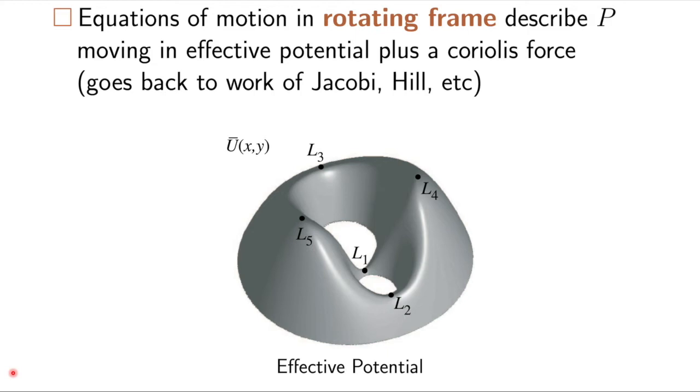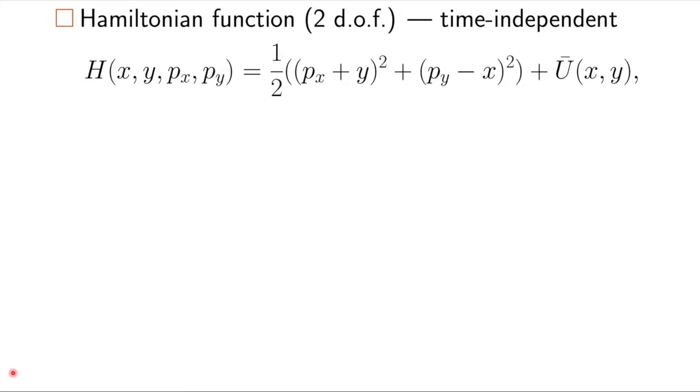The equations of motion in this rotating frame describe the particle as moving in an effective potential plus a Coriolis force. This is the Hamiltonian for the simplest version of the problem. It's the two degree of freedom, so planar problem. The test particle is restricted to the orbital plane of M1 and M2.